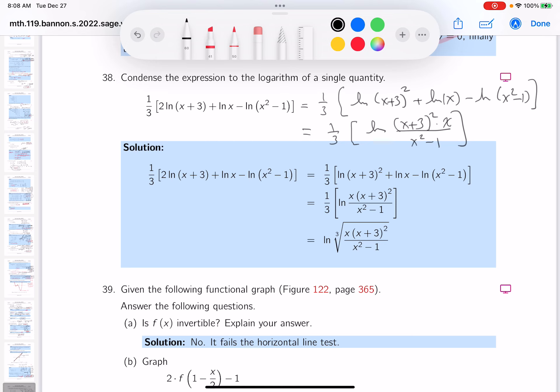looking at a cube root now and write that down. So it's natural log of the cube root of, let's write this down, x times x plus three squared over x squared minus one.